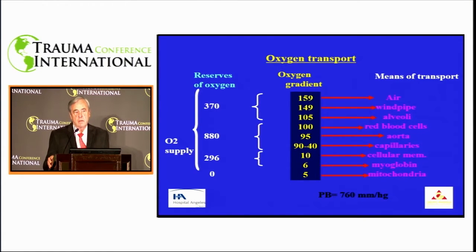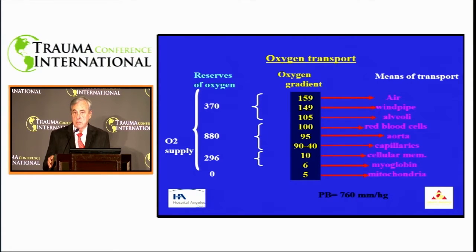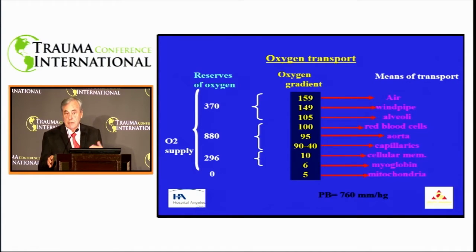This cascade causes oxygen to go down depending on where we measure it. When it enters with a pressure of 159 in the air and is mixed with water vapor, it goes down until in the myoglobin the values we can measure are 6, and in the cell mitochondria at set 5. The message is that we should always make adjustments based on where we live because altitude influences this quite a bit. At the Ancelis Hospital in Las Lomas, instead of having 160 millimeters of mercury of barometric pressure, we are operating at 572.